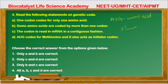Statement four — AUG codes for methionine and also acts as the initiator codon — yes, this is also correct. All four statements are correct, so the correct answer is option number four.